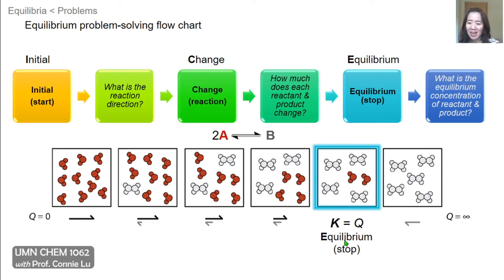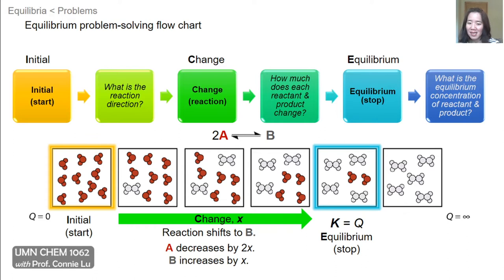We know that equilibrium is when Q equals K, and this is when the reaction will come to rest — the net concentrations will stop changing. So let's say the problem starts initially with all A. Because we only have reactants, the natural progression for the reaction direction is towards products, so the reaction would proceed to B, or to the right.